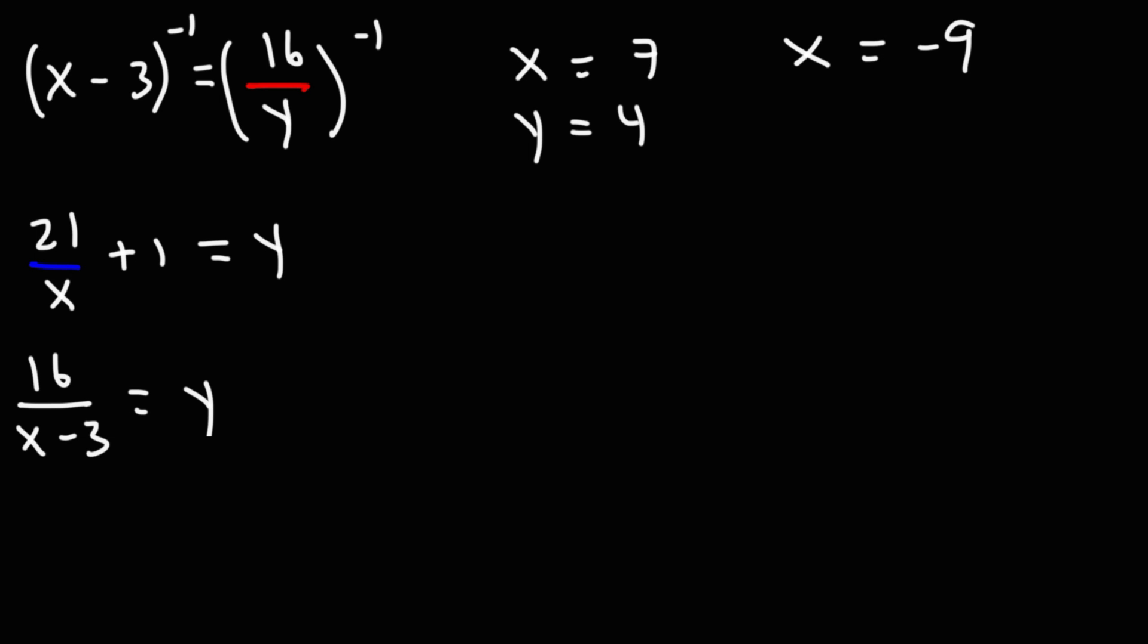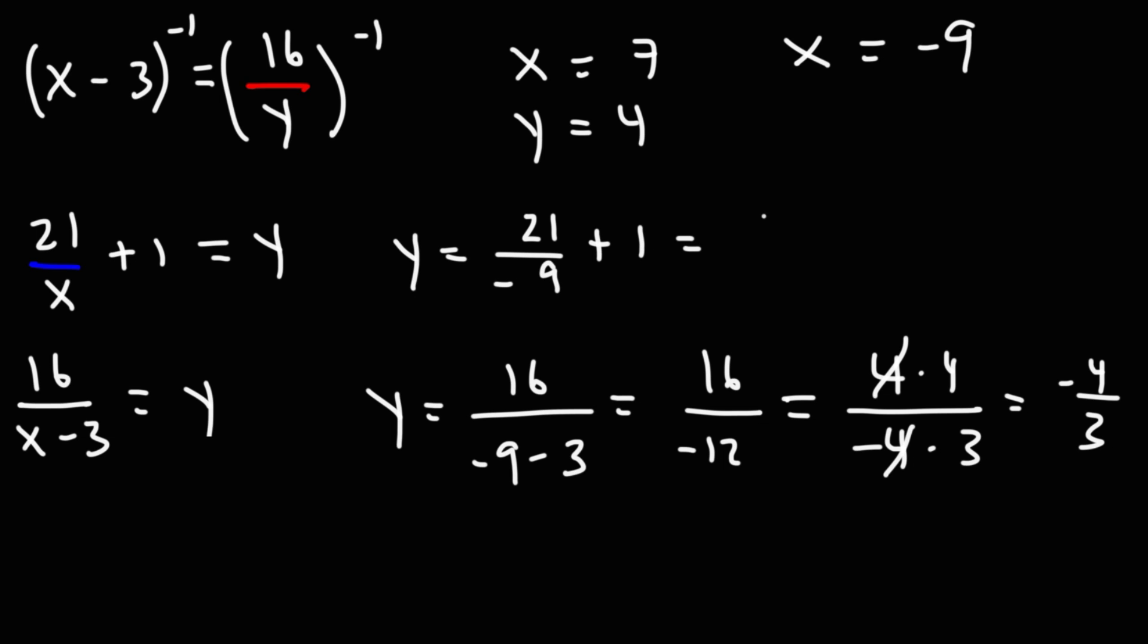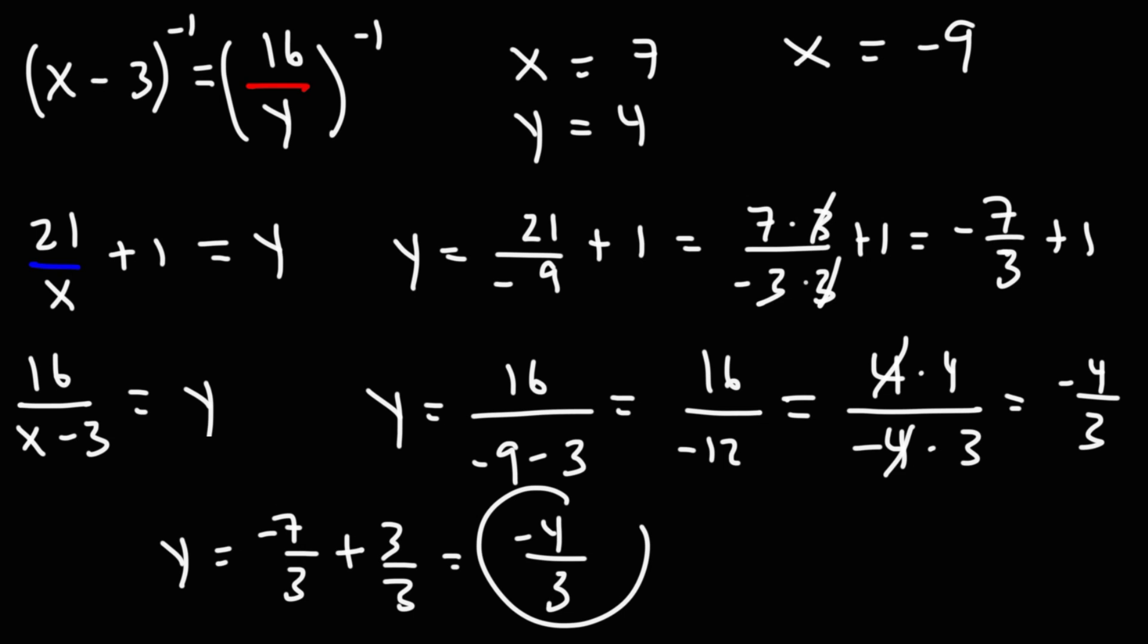Now let's check the other answer to see if it's correct. So I'm going to replace x with negative 9. Negative 9 minus 3 is negative 12. 16 is 4 times 4. 12 is 4 times 3. If we cancel the 4, we'll end up with negative 4 over 3. Now let's try the other equation. So 21 over negative 9 plus 1. 21 is 7 times 3. Negative 9 is negative 3 times 3. We can cross that out. So we're left with negative 7 over 3 plus 1. Now the 1, I'm going to multiply it by 3 over 3. Negative 7 plus 3 is negative 4. And so it's the same.